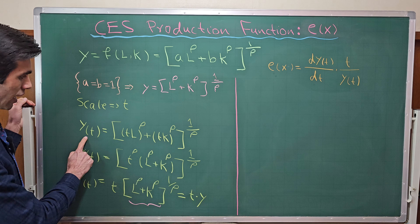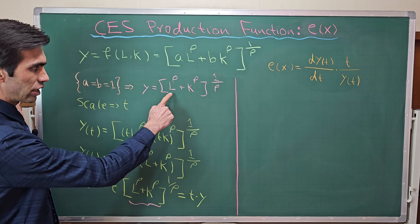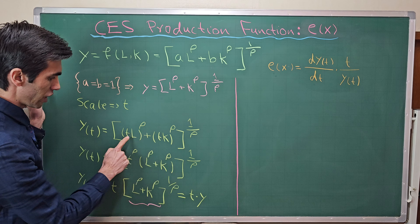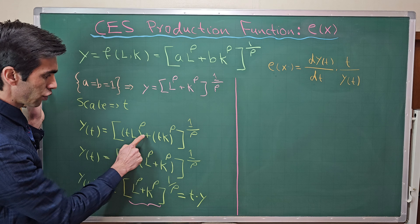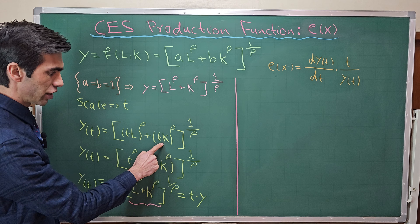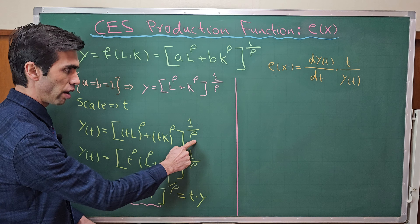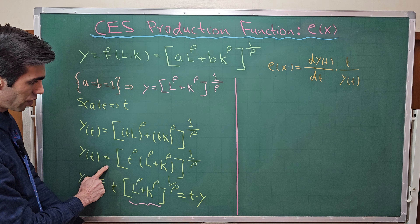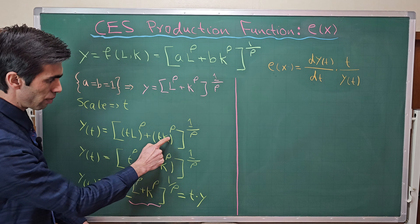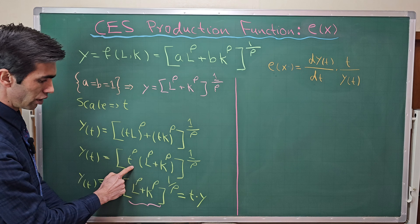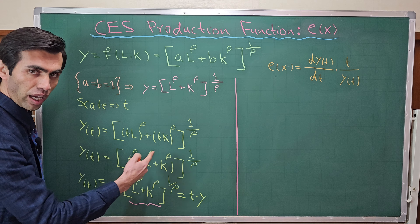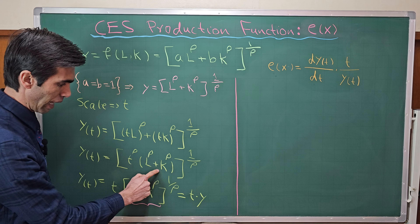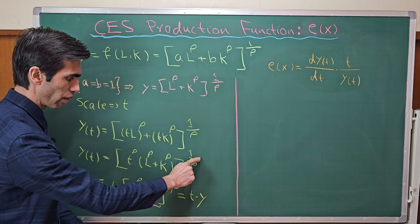y(t) means we are going to scale each input by t. So this will change to: t multiplied by l to the power of rho, plus t multiplied by k to the power of rho, whole to the power of 1 over rho. Then y(t) equals — we have t to the power of rho here and t to the power of rho here — we use it as a common factor: t to the power of rho multiplied by (l to the power of rho plus k to the power of rho), whole to the power of 1 over rho.